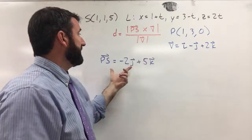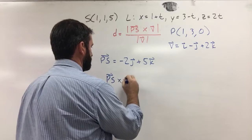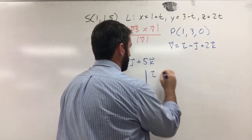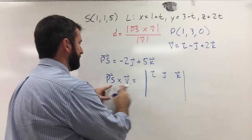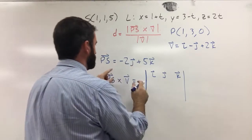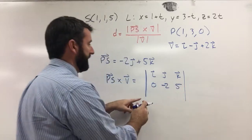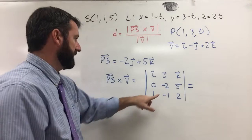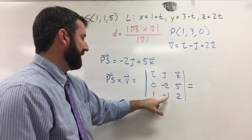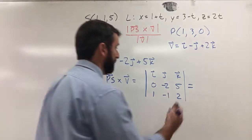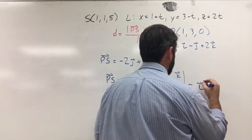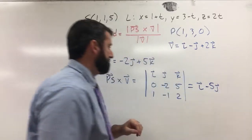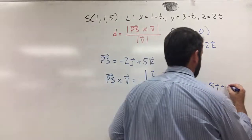We need the magnitude of PS cross V. PS cross V is equal to the determinant of this matrix with i, j, and k in the first row; the components of PS — 0, negative 2, and 5 — in the second row; and the components of V — 1, negative 1, and 2 — in the bottom row. This gives negative 4 minus negative 5, which is 1i; then 0 minus 5, which is negative 5j; and 0 minus negative 2, which is positive 2k.